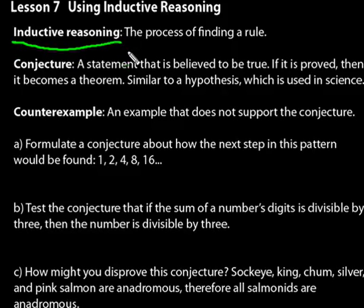The rules we talk about in geometry are the postulates and properties. We apply those to find new rules, new truths. Sometimes, though, we have to find out what the rules are. In mathematics, we start with something called a conjecture — a statement that's believed to be true. We don't know for sure, but it's believed to be true. If it's proved, then it becomes a theorem.